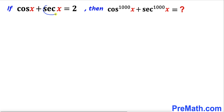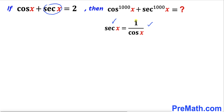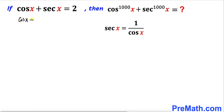Let's focus on secant of x. We know that secant of x is always equal to 1 divided by cosine of x. So therefore I am going to replace secant of x by 1 divided by cosine of x. Our equation can be written as cosine of x plus 1 divided by cosine of x equals 2.